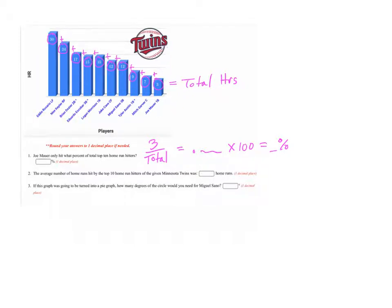So in this case, all you're going to do is take the total and divide it by 10. And that will tell you what the average number of home runs the top 10 home run hitters had.